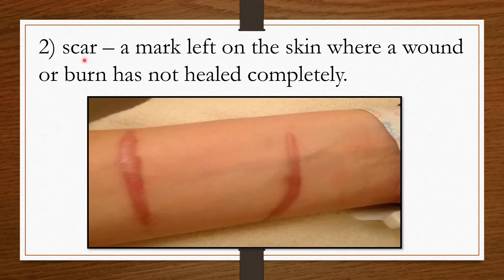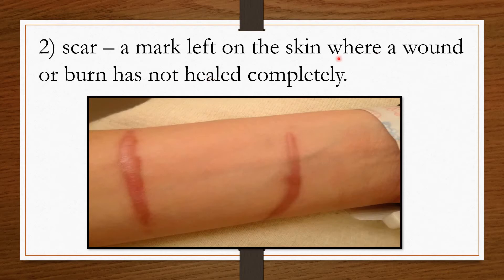The second word is 'scar.' A scar is a mark left on the skin where a wound or burn has not healed completely. A wound is when we fall and blood comes. A burn is when we touch something hot or come in contact with fire. That mark left behind is called a scar.